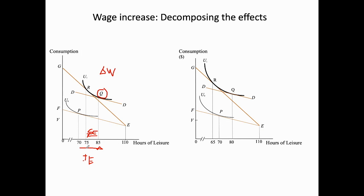When the income effect is more dominant than the substitution effect, an increase in the wage decreases hours worked. This left side diagram shows the situation where the income effect exceeds the substitution effect, and as a result this worker would have fewer hours worked — hours worked decrease. This is the net effect considering both income and substitution effects.